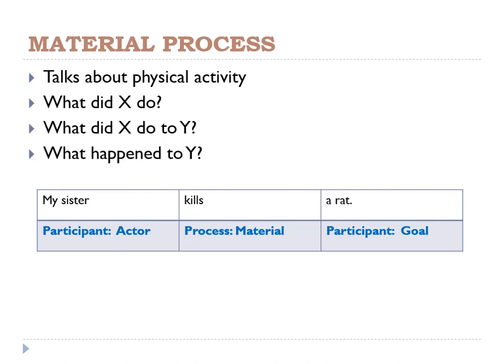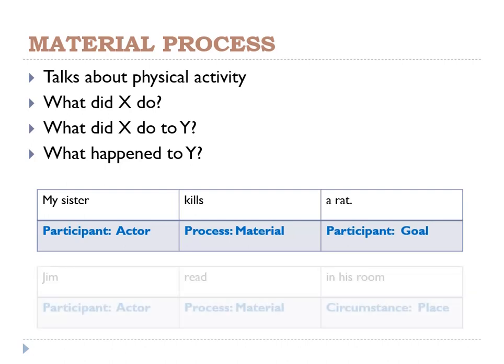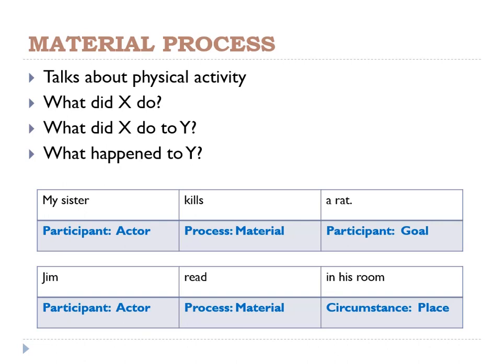Remember that not every clause has a goal in material process. Sometimes when we deal with intransitive verbs like read, sleep, and other types of verbs that do not need objects, we don't need a goal. For example: Jim read in his room. Reading is a material process because it involves your physical self, but sometimes you don't need to say Jim read a book. You just need to say Jim read where. So in this clause we have the actor Jim, the process read (past tense), and the circumstance of place: in his room.